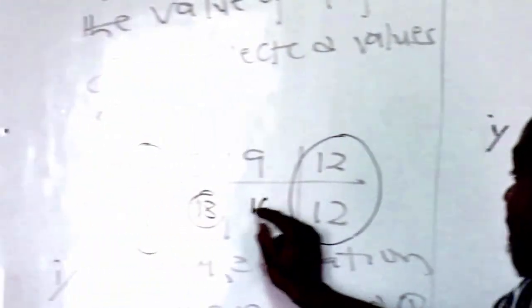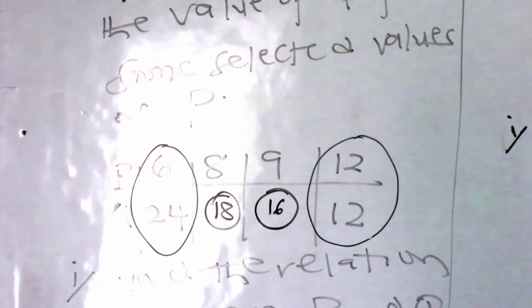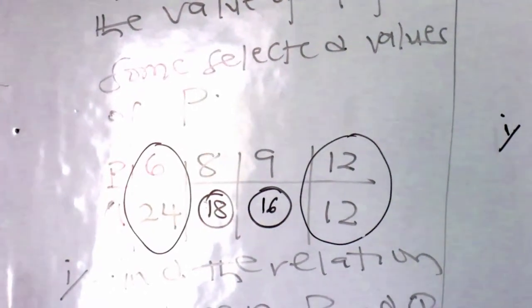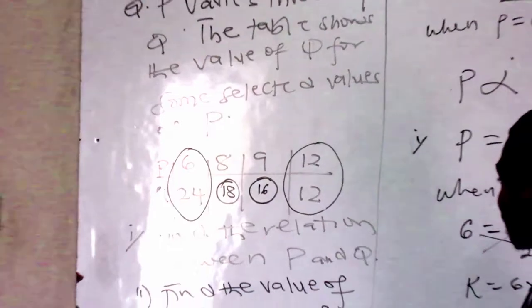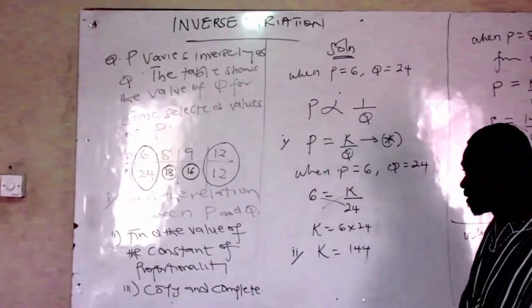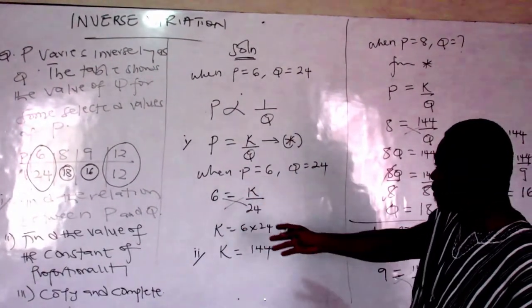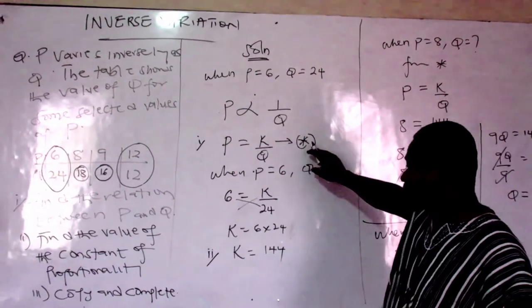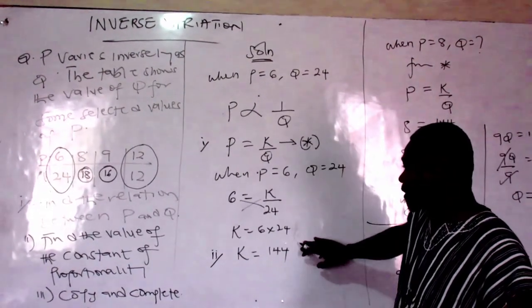So when you come to this side of the board, you have 16 here. That's a complete question. So you have finished copying and completed, as the question demanded. So find a relation between P and KL. There is a relation, constant of proportionality, that is it.